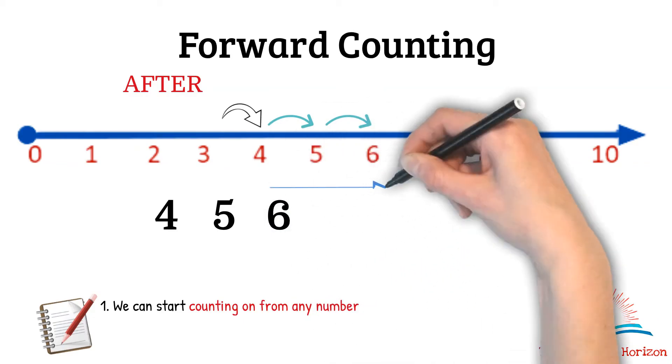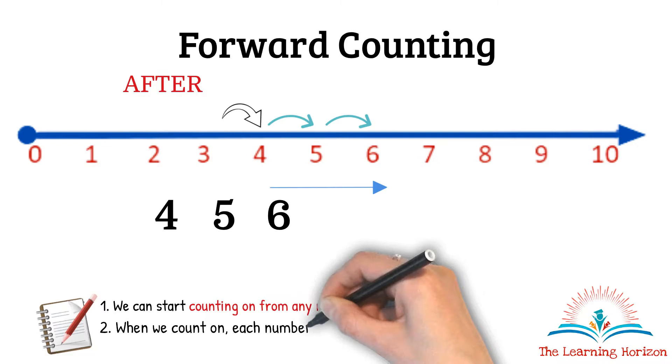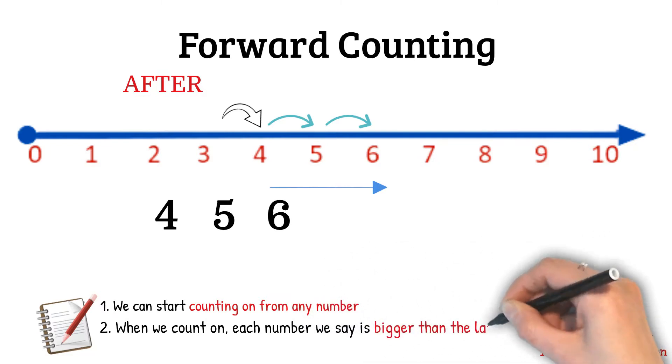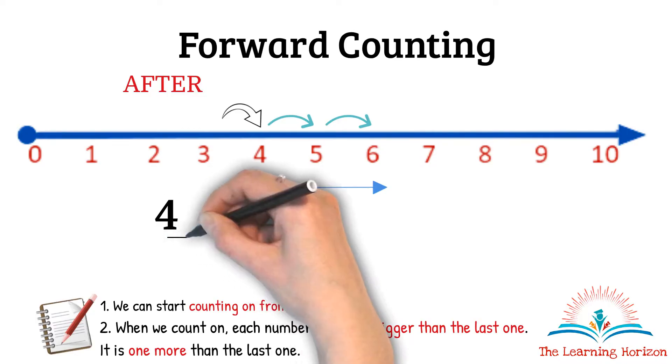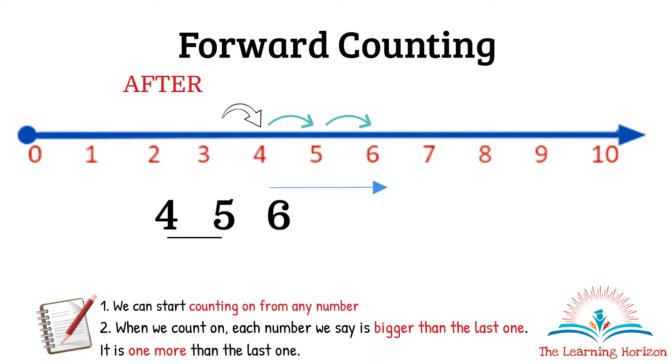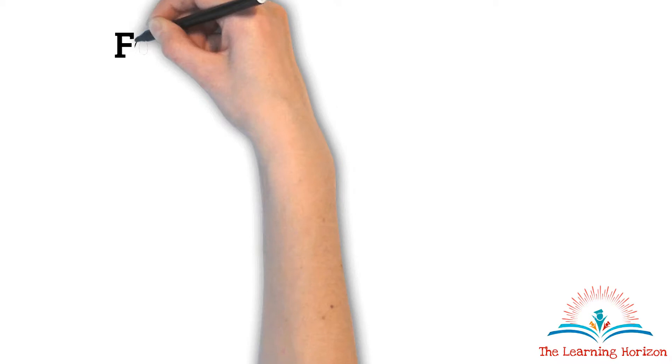In forward counting, when we count on, each number we say is bigger than the last one. It is 1 more than the last one. Let us understand this with the same example here. Observe these two numbers. We began counting on from 4. We counted and we got 5 which is 1 more than 4. Similarly, when we counted on from 5 we got 6 which is again 1 more than 5.